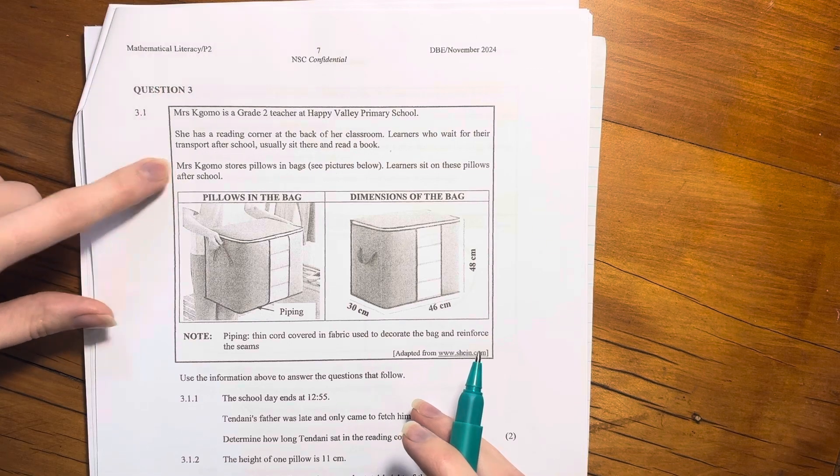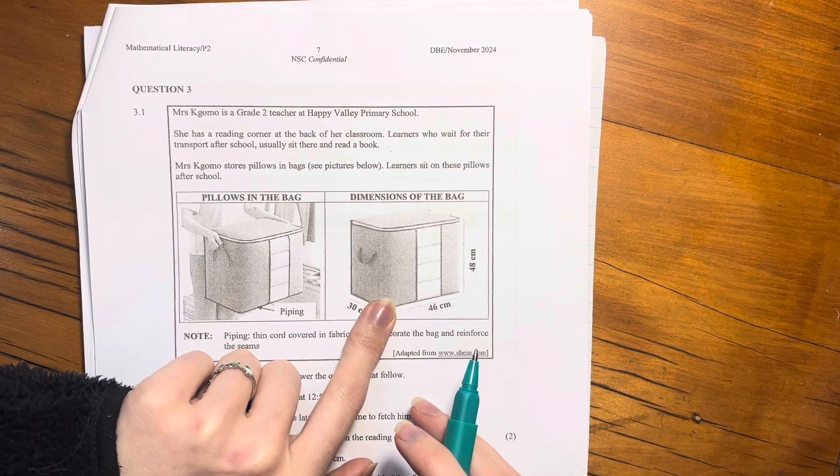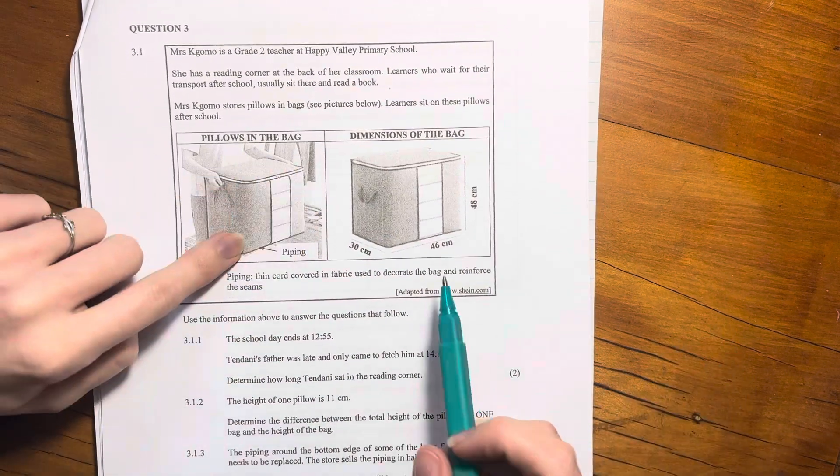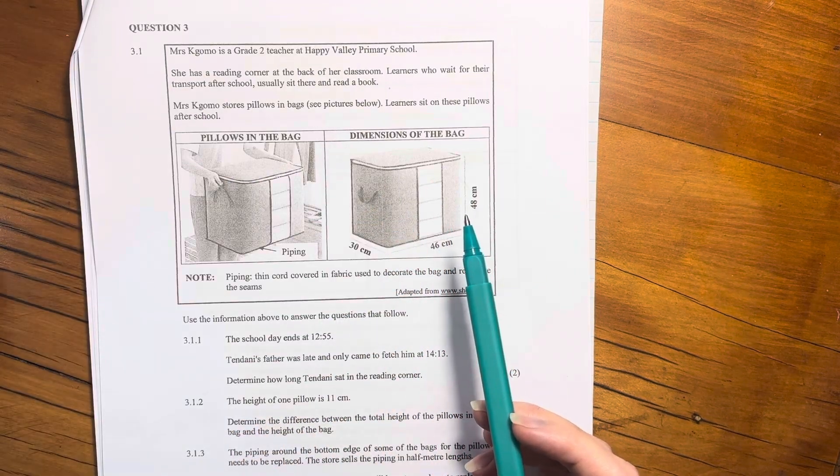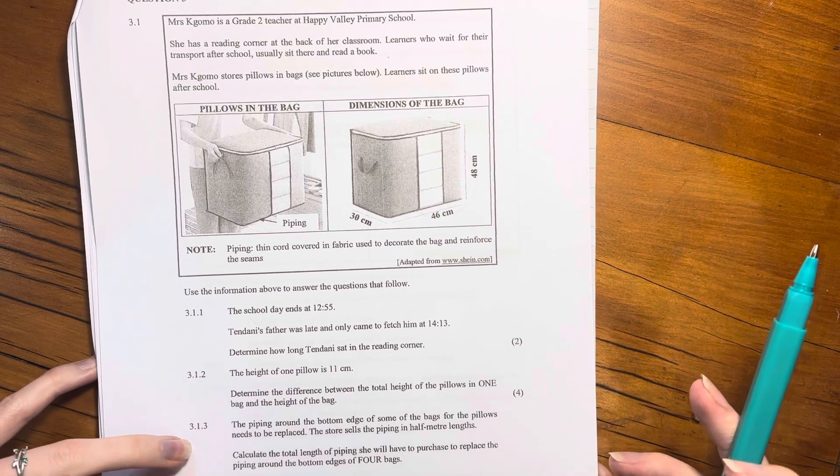Learners who wait for their transport after school usually sit there and read a book. Mrs. Homo stores pillows in bags. See picture below. Learners sit on these pillows after school. So here's the bag and then those are pillows, right? So you'll see that there's four pillows in the bag. They take out the pillows, sit on the pillows and then put them back in the bag, just so that you understand what's going on there.